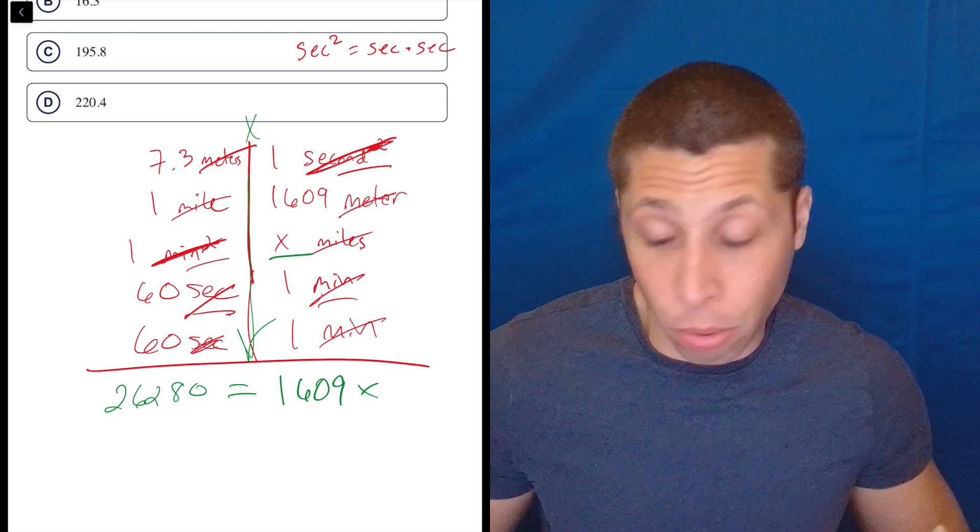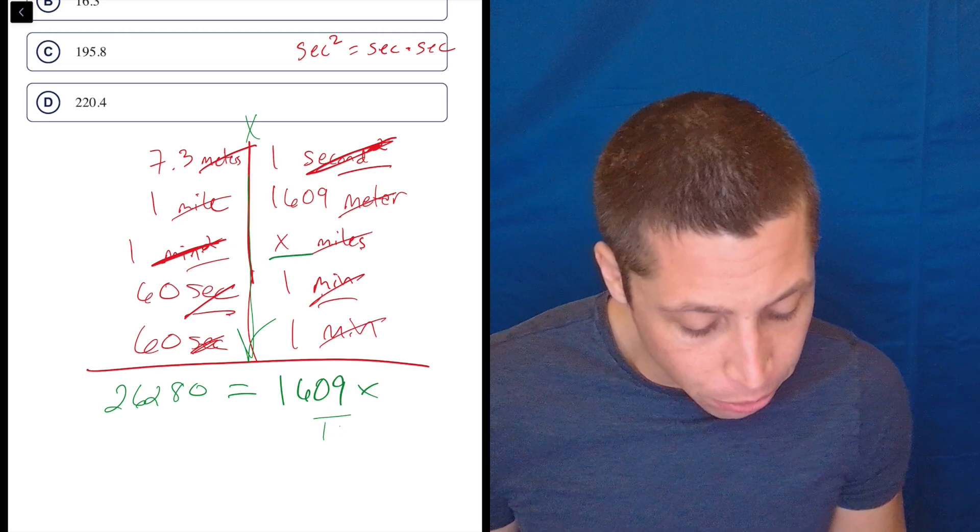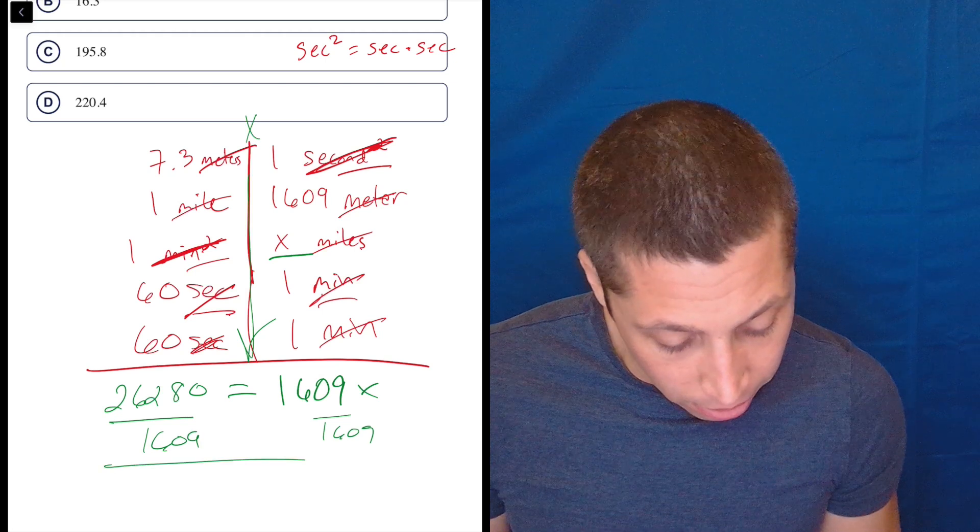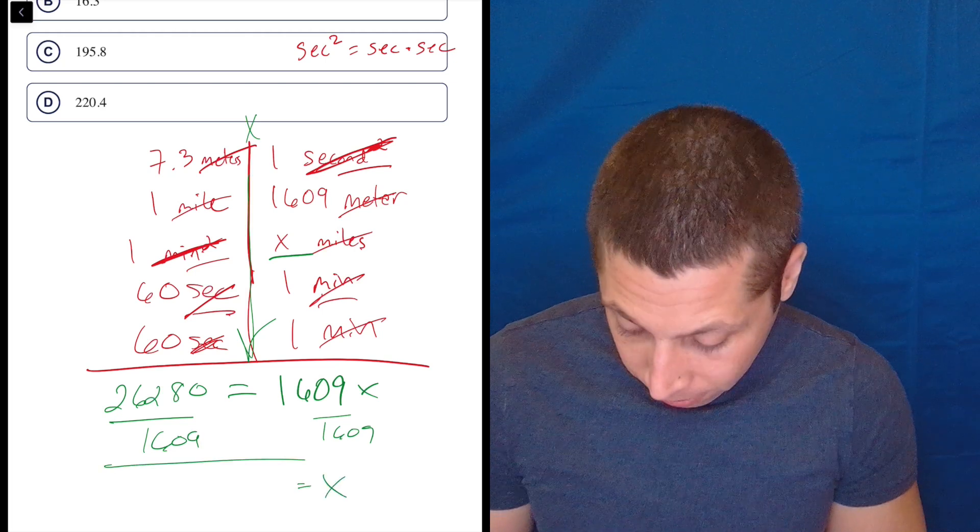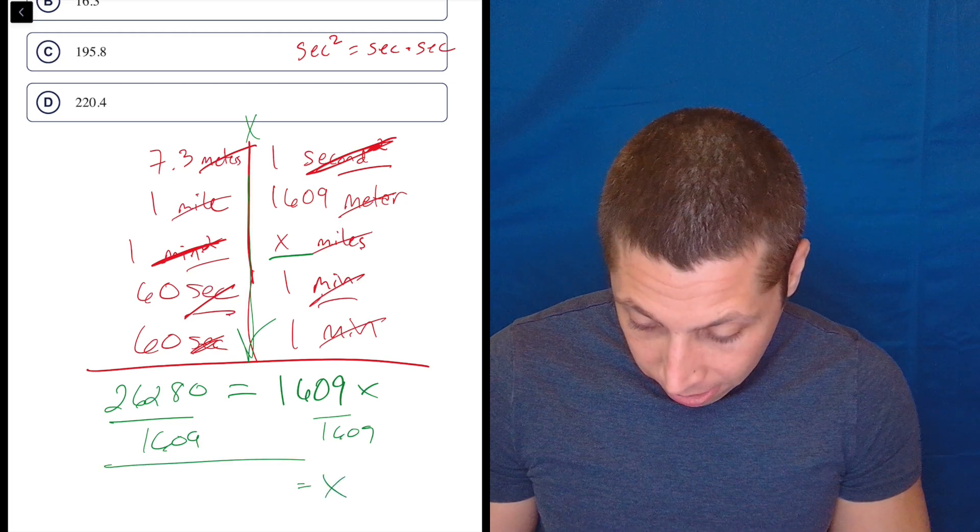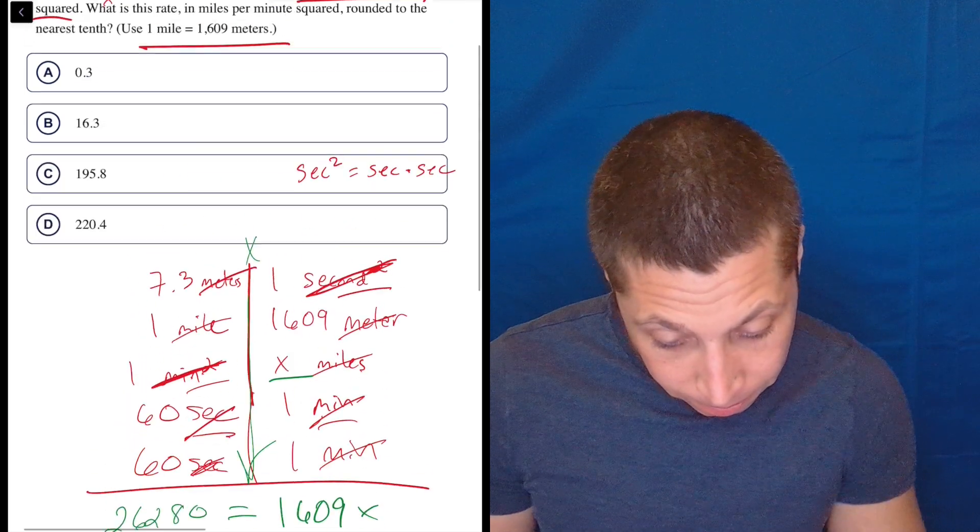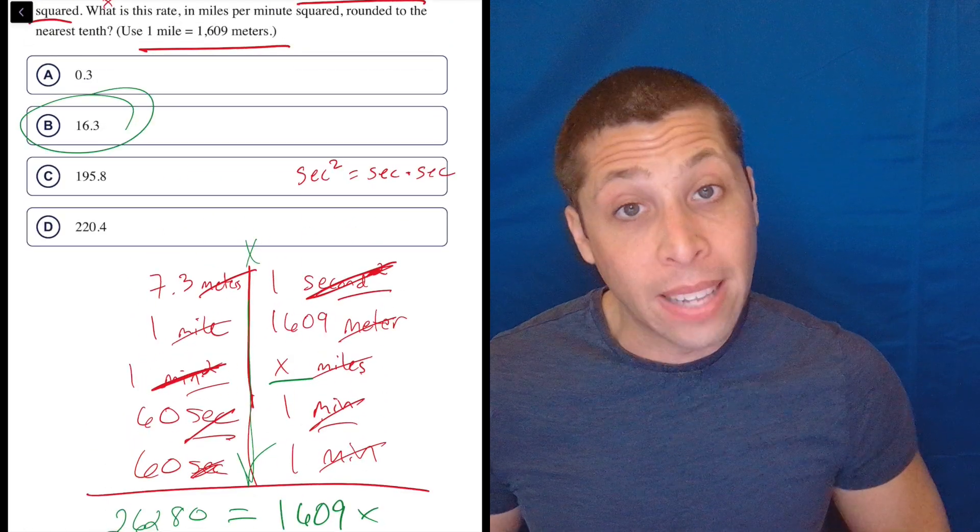Don't forget something's unknown. We're solving for something. And now it's easy to do. Just divide by 1609, divide by 1609, and X is equal to, divide by 1609, 16.3 B. And that's the answer.